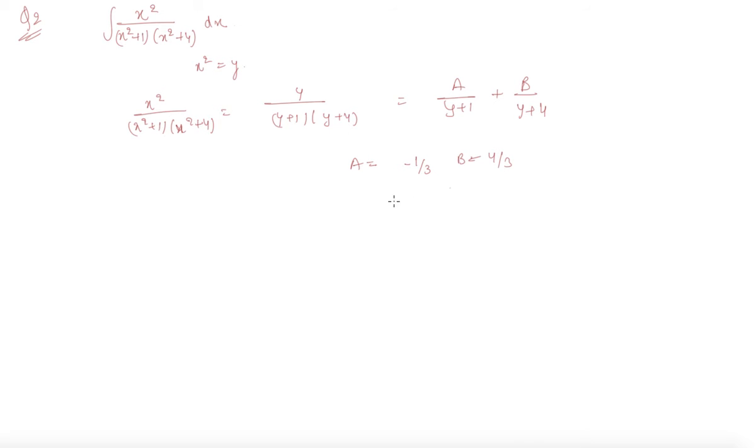b equals 4 by 3. So now my expression becomes, I am again putting back the value of y equals x square. So my integral of this becomes this plus this.